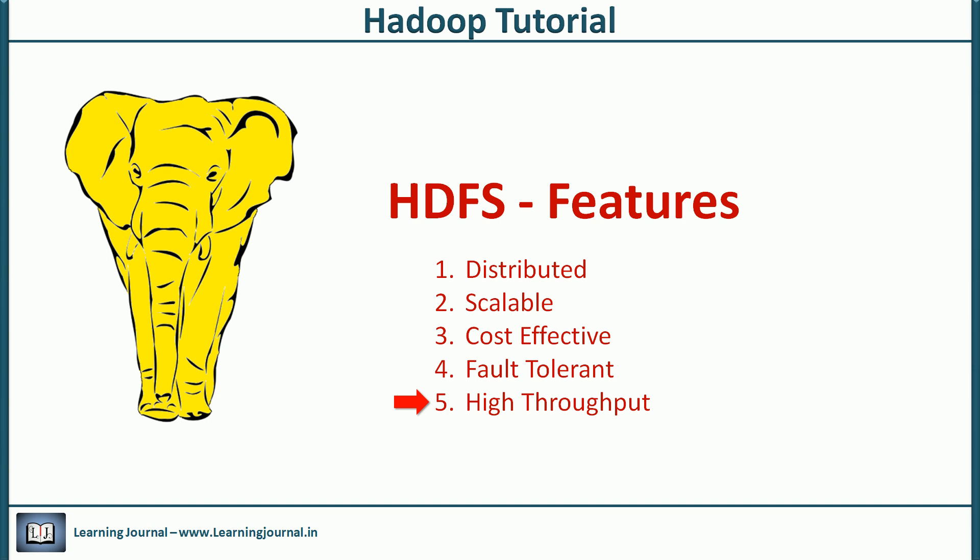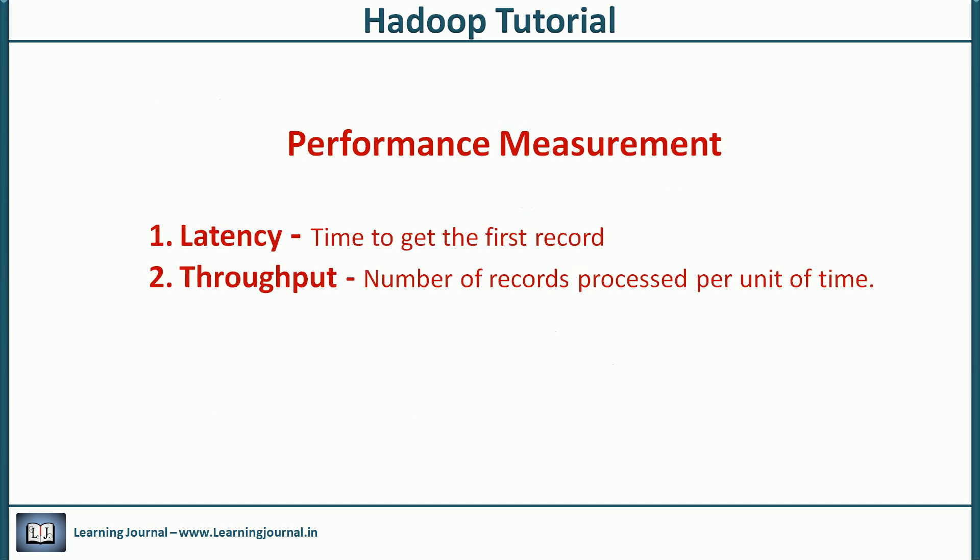The last one is high throughput. Okay. So, if you have been using data systems, you may have already heard these two terms. Latency and throughput. Latency is the time to get the first record. The latency is very critical for interactive systems where a user clicked a button and waiting to get some response back. Throughput is different.